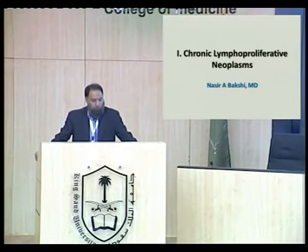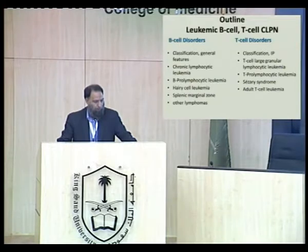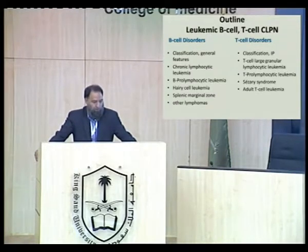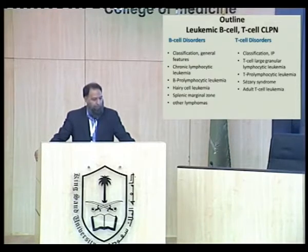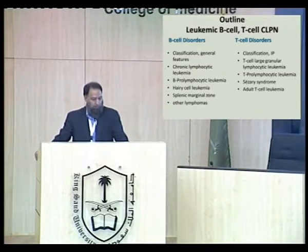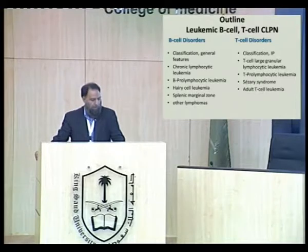I have two major topics to cover during this one hour. The first is chronic lymphoproliferative neoplasms, both B and T cell types, so you understand all the basics. I'm not going through the classifications at this point because we already assume you know that and have some understanding of the WHO classification. The outline for the first part covers all B cell and T cell chronic lymphoproliferative neoplasms which involve the blood.